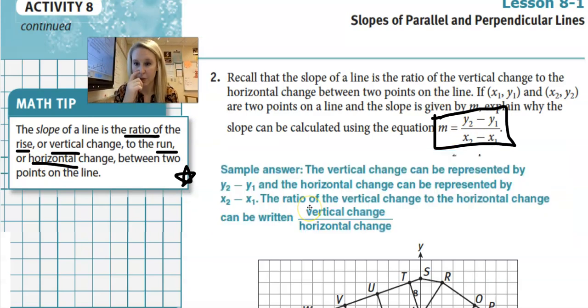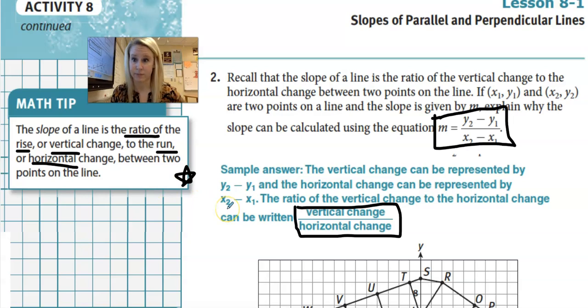So hopefully you remember this formula from last year. It is the slope formula. It allows you to calculate the slope between two points. And so again, over here, the slope of a line is the ratio, meaning fraction, of the rise, which is the vertical change, to the run, the horizontal change. So you've probably seen the formula. You've probably seen rise over run before. But the answer. The vertical change can be represented by Y sub 2 minus Y sub 1. Horizontal change can be represented by X sub 2 minus X sub 1. So the ratio of the vertical to the horizontal can be written as the vertical over the horizontal. Rise over run will give you that ratio.